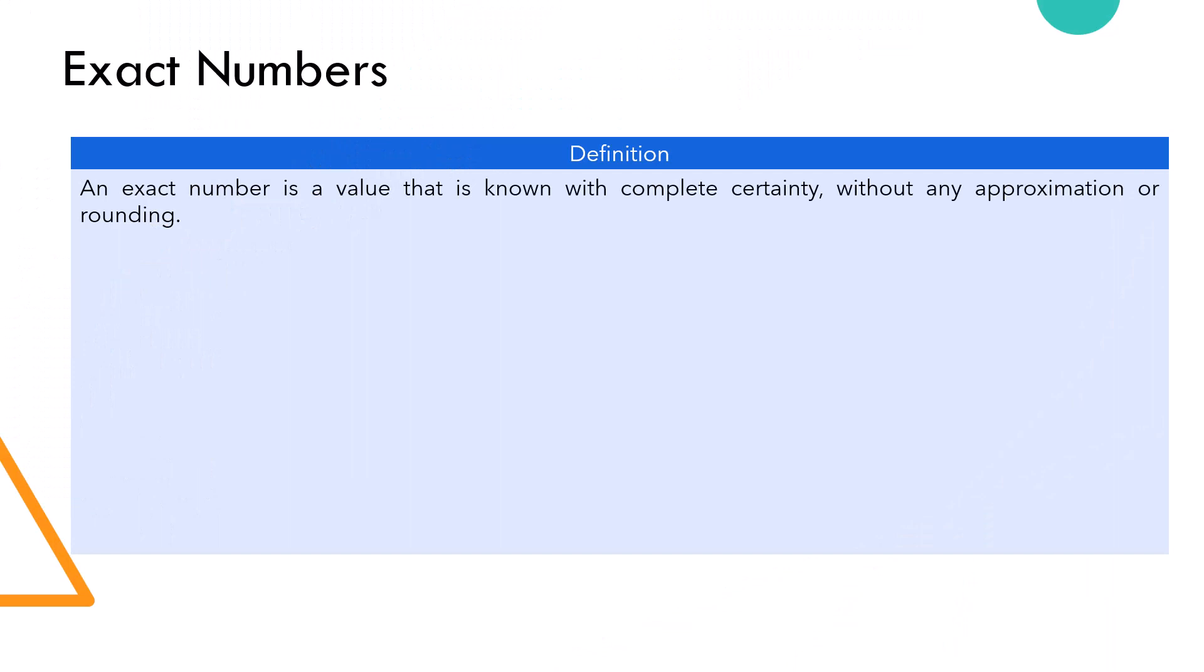To begin, let us establish what exactly we mean by exact numbers. In mathematics, an exact number is a value that is known with complete certainty without any approximation or rounding.